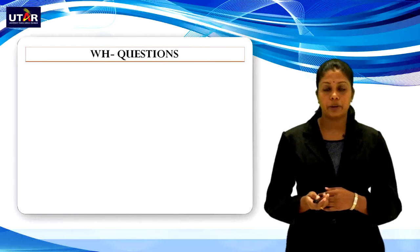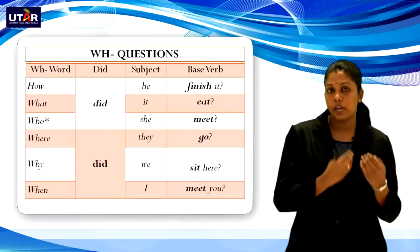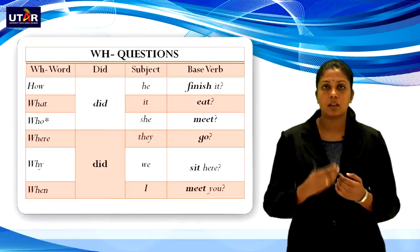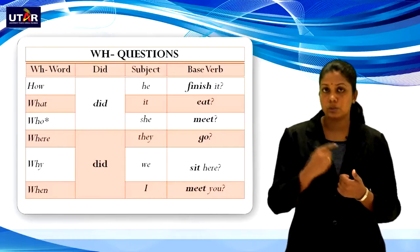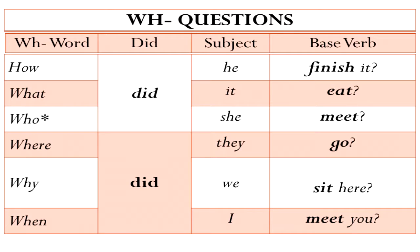Now let's look at WH words. In order to construct questions using WH words, you should start the question with a WH word, followed by the auxiliary verb, subject, and the base verb. The WH words are what, who, where, when, why, and also how. Examples: How did he finish it? — finish is in base form. What did it eat? Who did she meet? Where did they go? Why did we sit here? When did I meet you?